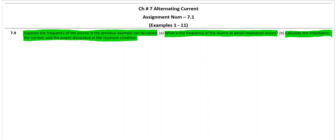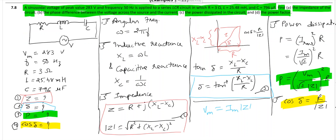So how do we find out the resonance frequency? Before that, let us have a look at the previous illustration first. In 7.8 we have a voltage source with maximum voltage 283 volts, frequency 50 Hz, resistance value 3 Ohm, inductance 25.48 mH, and capacitor 796 µF.